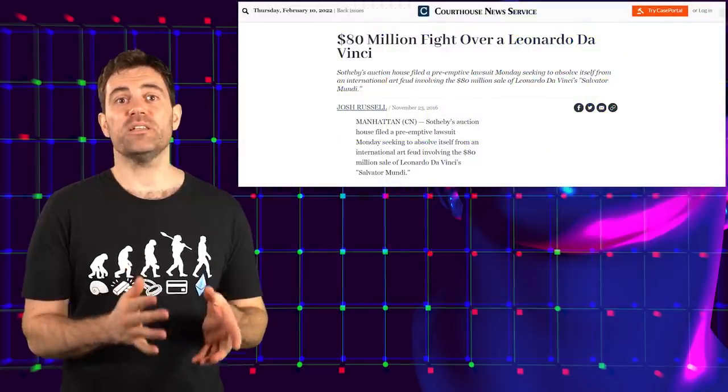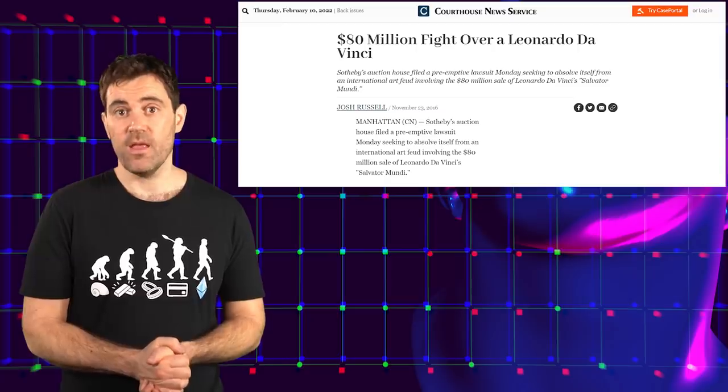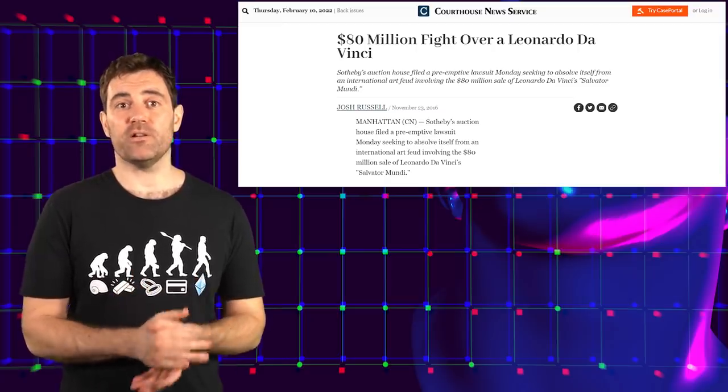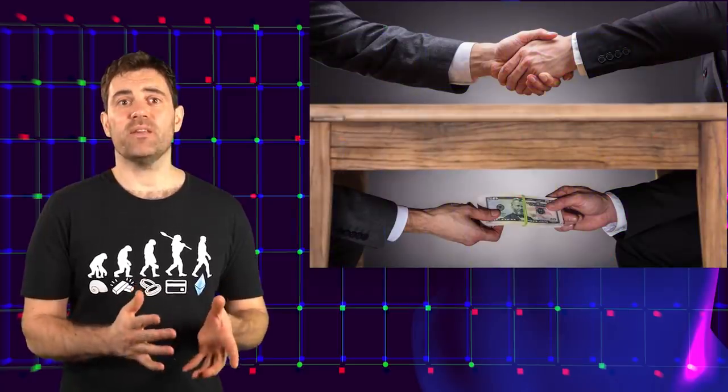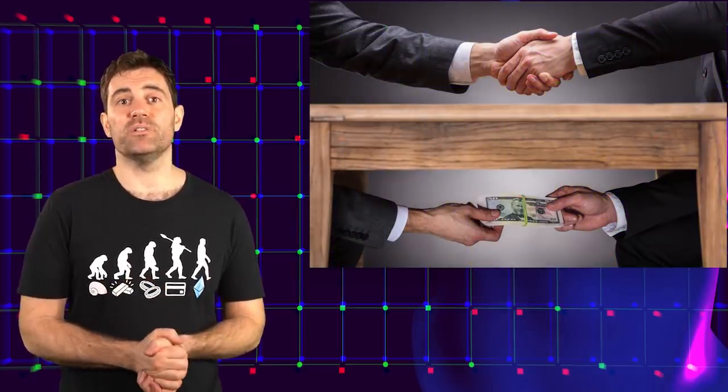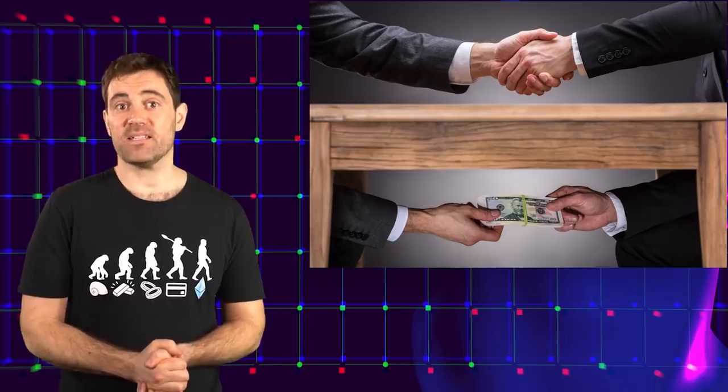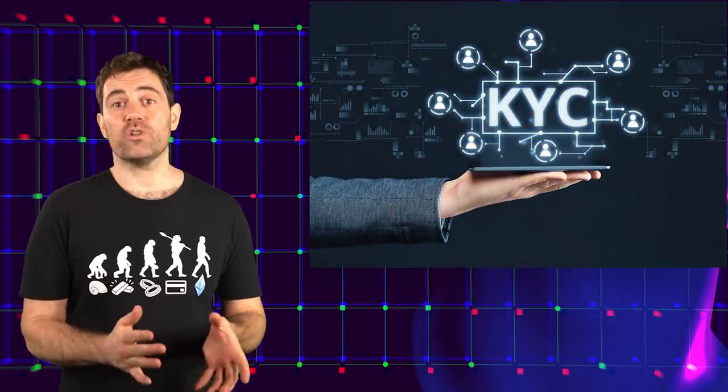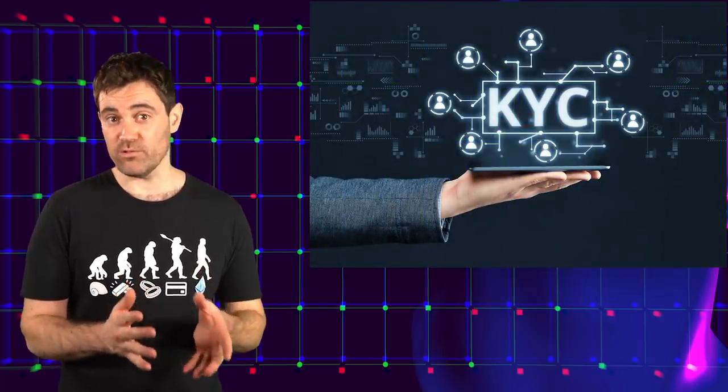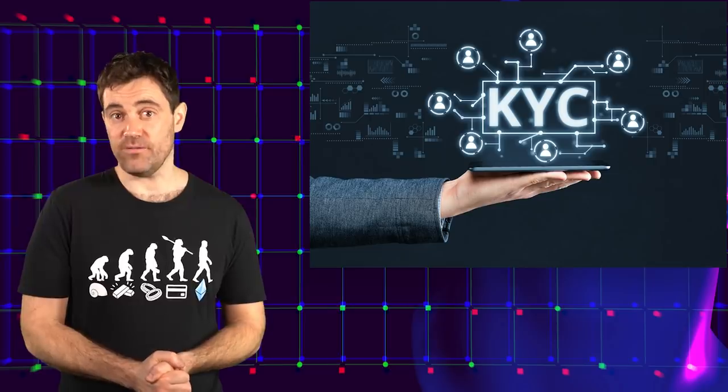The Salvatore Mundi subsequently sold for a staggering $80 million, creating a lot of controversy in the fine art community. The $127 million sale that happened shortly after that even resulted in a lawsuit. Besides the fact that the authenticity of the Salvatore Mundi is disputed to this day, the auction house which sold the painting allegedly has a history of working with money launderers.